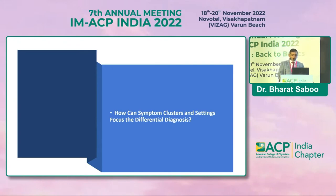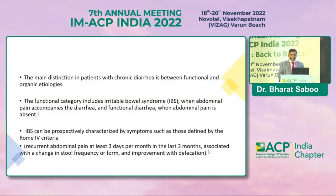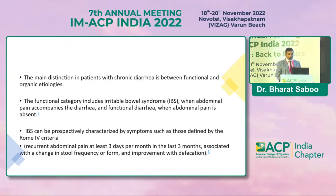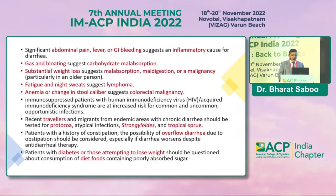The main distinction in patients with chronic diarrhea is between functional and organic etiologies. Functional categories include IBS when abdominal pain accompanies the diarrhea, and functional diarrhea when abdominal pain is absent. IBS can be prospectively characterized by symptoms defined by the Rome 4 criteria, and certain symptoms can prompt us toward the correct diagnosis.